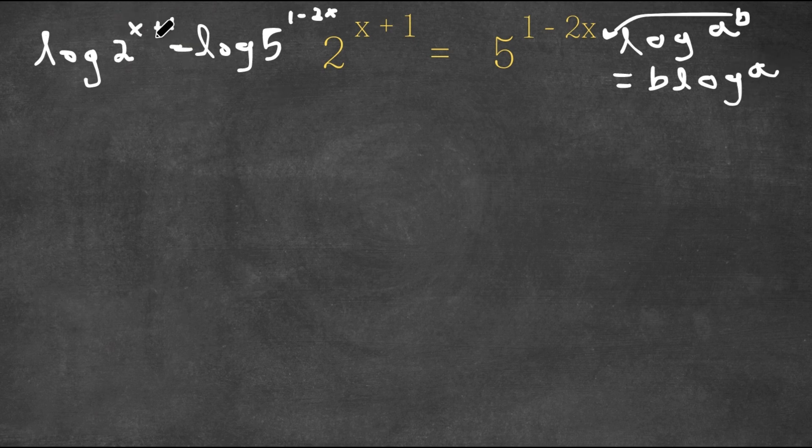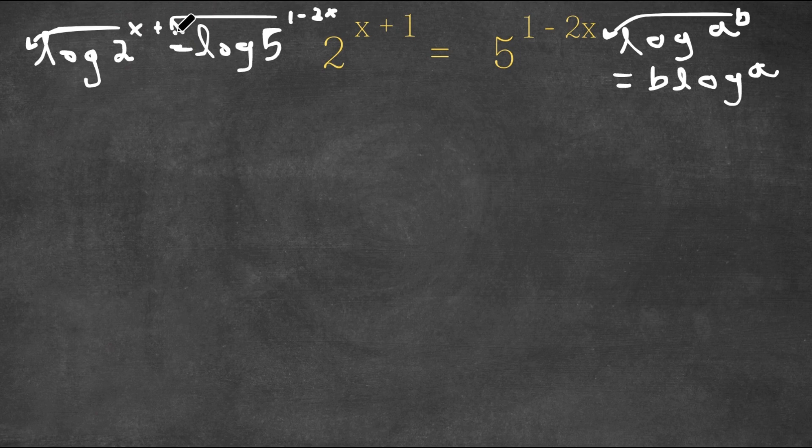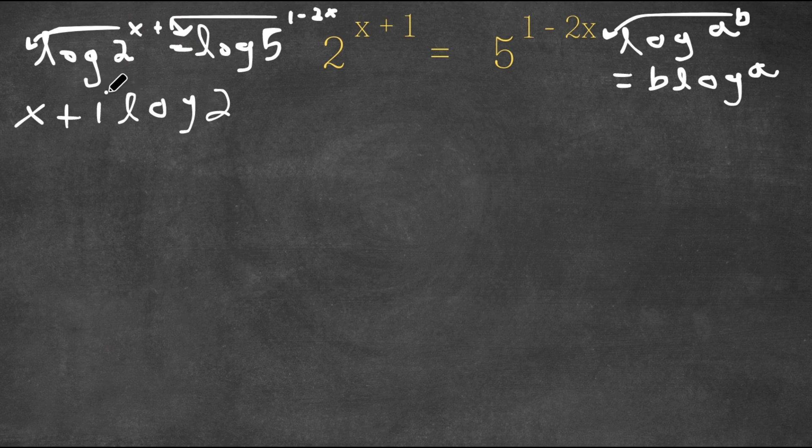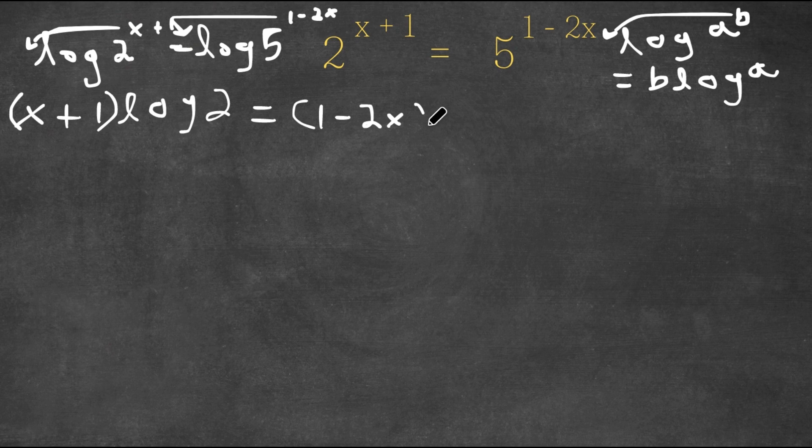So that's exactly what I'm going to do to both of these terms. I'm going to move the exponents to the front of the logarithm. So now I would have x plus 1 times log 2 is equal to 1 minus 2x times log 5.